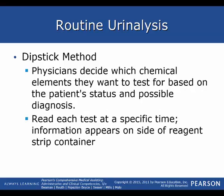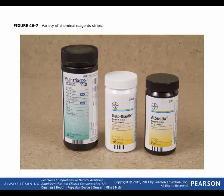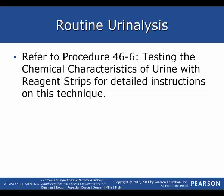Physicians decide which chemical elements to test for based on patient status and possible diagnosis, and you read each test at a specific time, as indicated on the side of the reagent strip container. For leukocytes, after one minute, if there is any hint of purple you wait an additional minute to read that strip. Please refer to procedure 46-6, testing the chemical characteristics of urine with reagent strips, for detailed instructions.